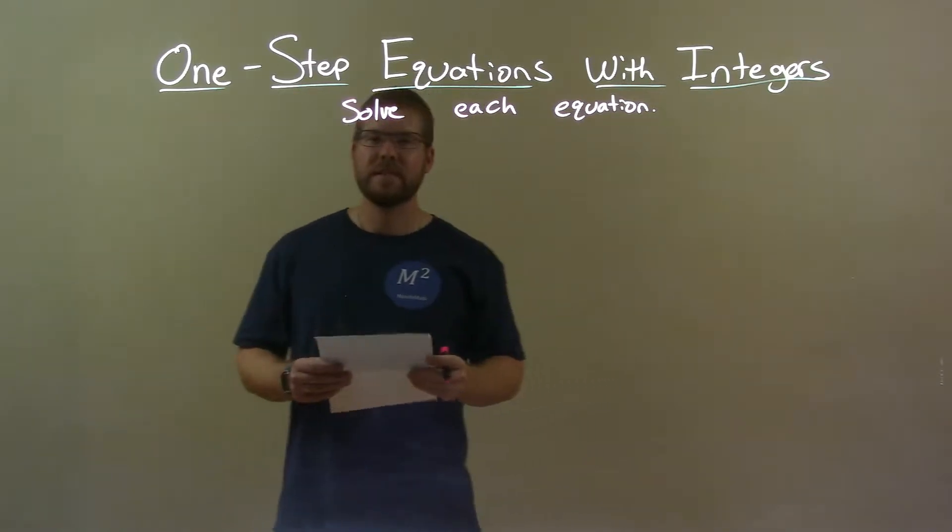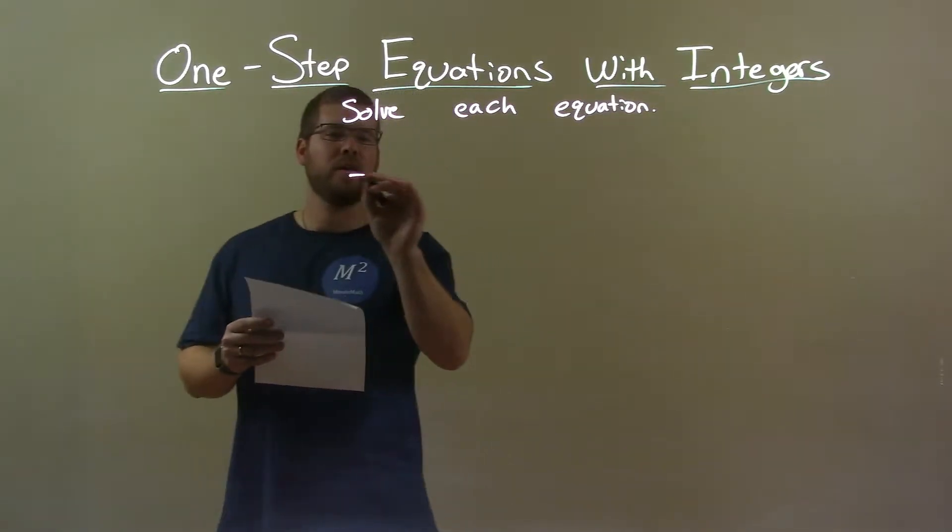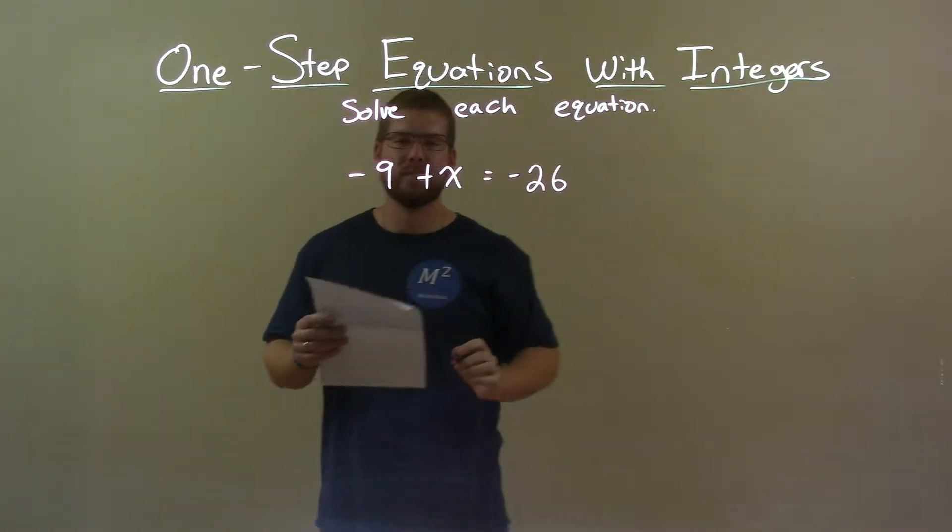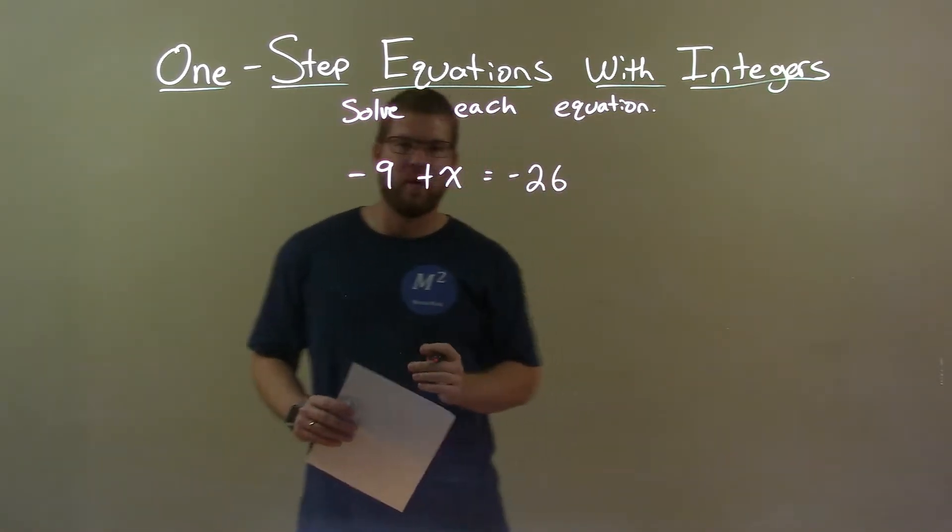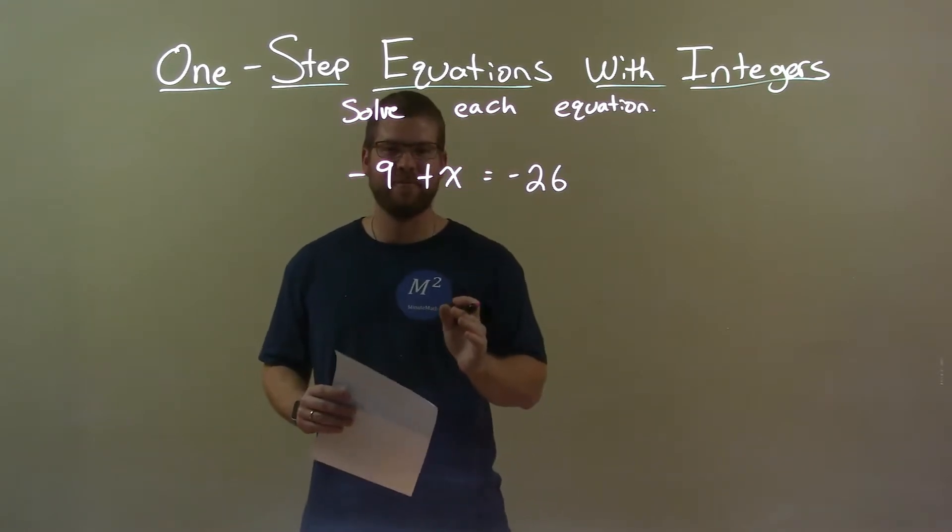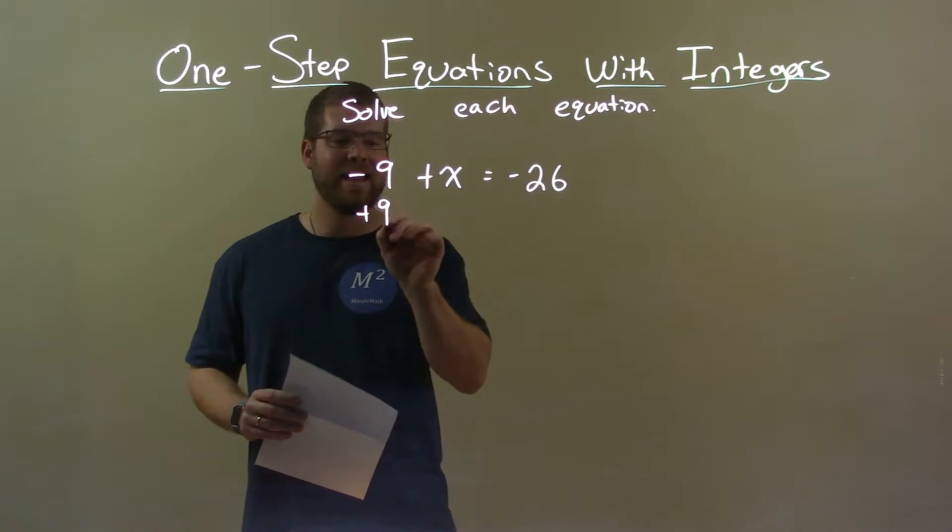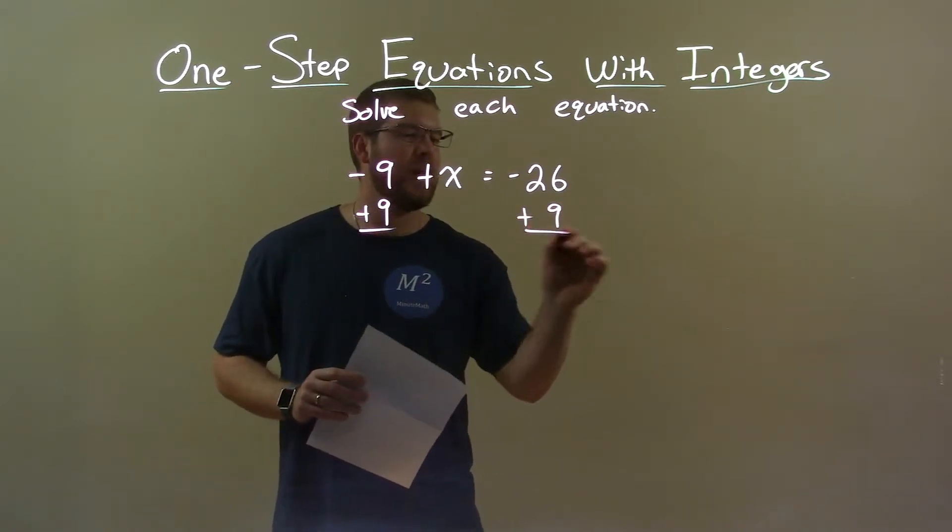If I was given this equation, negative 9 plus x equals negative 26. I want to get x by itself, but there's a negative 9 there. To get rid of the negative 9, I have to add 9 to both sides, the opposite.